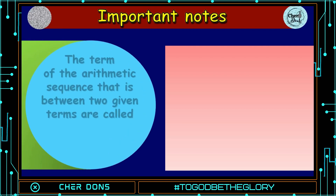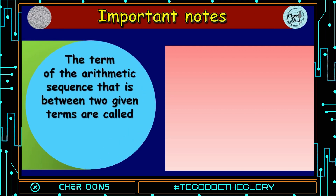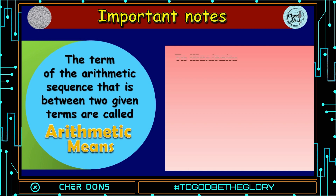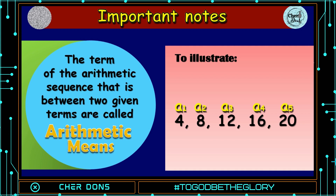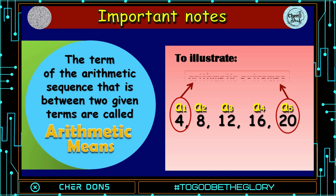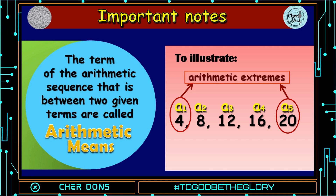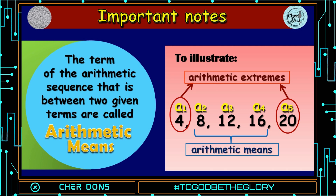Important Notes. The terms of the arithmetic sequence that are between two given terms are called arithmetic means. To illustrate, I have here a sequence: 4, 8, 12, 16, and 20. a sub 1 is 4, a sub 2 is 8, a sub 3 is 12, a sub 4 is 16, and a sub 5 is 20. The first and the last terms of a finite arithmetic sequence are called arithmetic extremes, which are 4 and 20. And the terms in between are called arithmetic means. These are 8, 12, and 16.